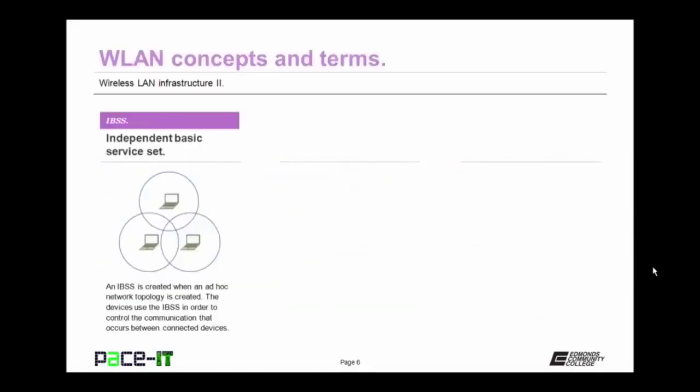Now let's move on to wireless LAN concepts and terms. First up is the IBSS, or Independent Basic Service Set. An IBSS is created when an ad hoc network topology is created. The devices use the IBSS in order to control the communication that occurs between the connected devices.